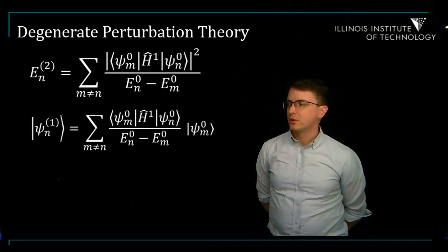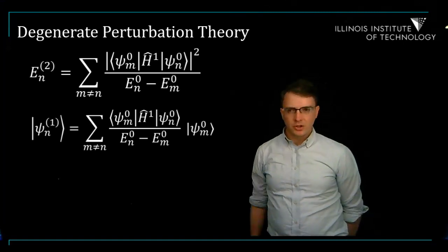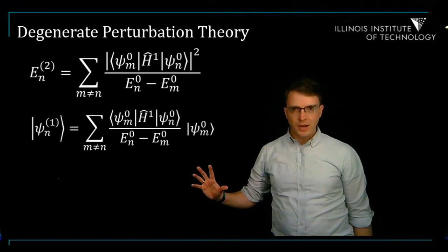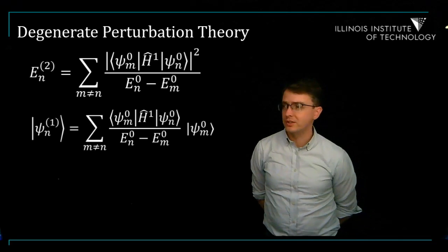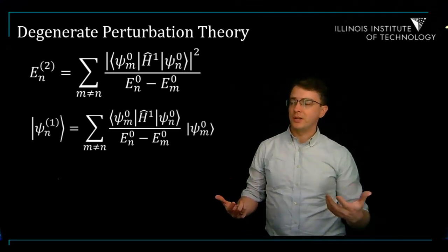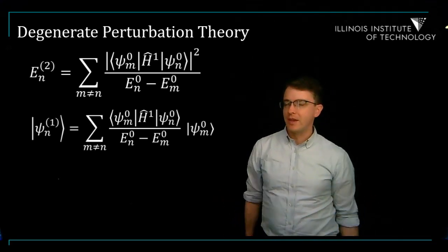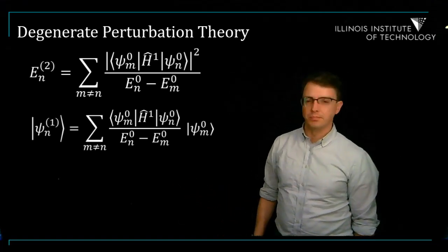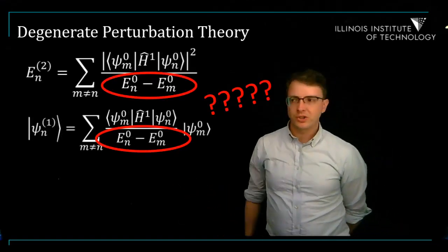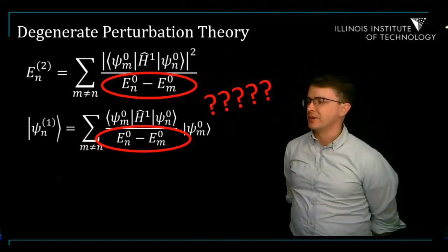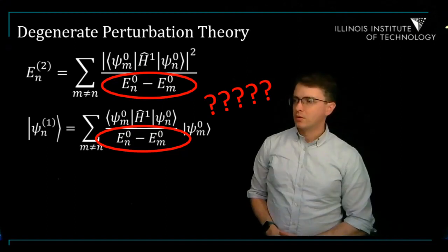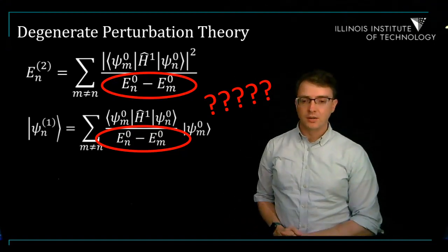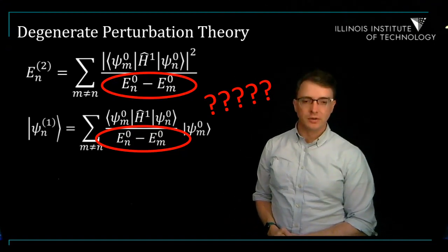What you notice with these two formulas is that there's something curious. You could imagine a situation where I have two energy states which have the same energy eigenvalue. In other words, M is not equal to N but the energies are the same, and then the denominator of these formulas seems to blow up. So one big question is how do we handle that kind of situation? Clearly these formulas don't work, and there's some ambiguity about which energy eigenstates I use when they have degenerate energy states.